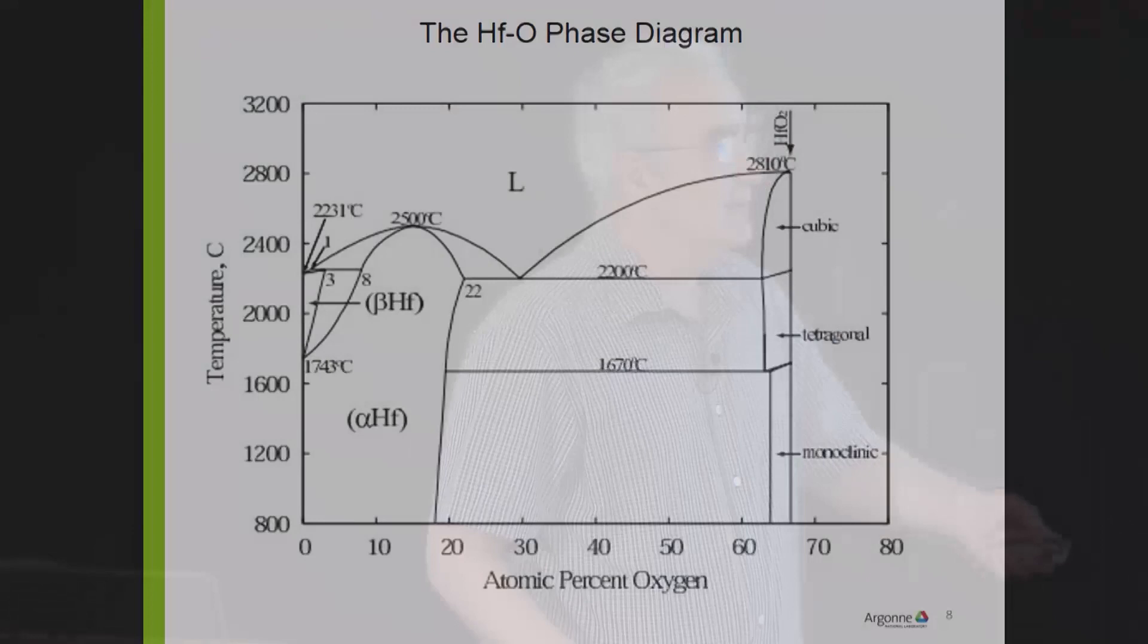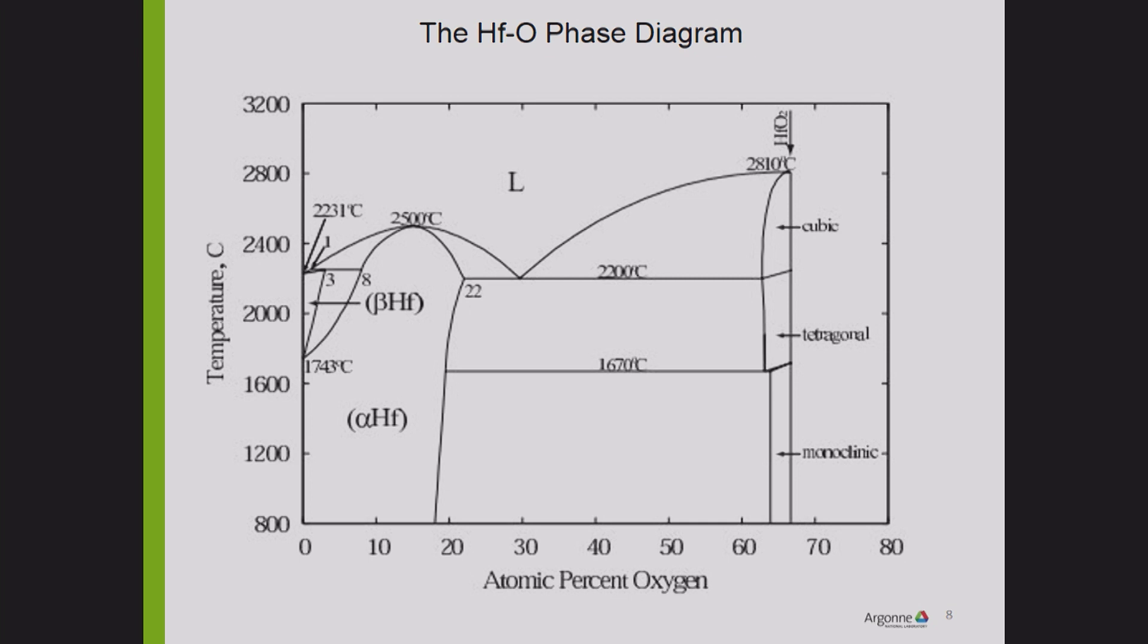These calculations were very simple in the beginning. You could do them on a calculator if you want, Texas instrument or whatever you used in high school. But then became more and more sophisticated and complex diagrams like this one are now available. This is hafnium and oxygen.